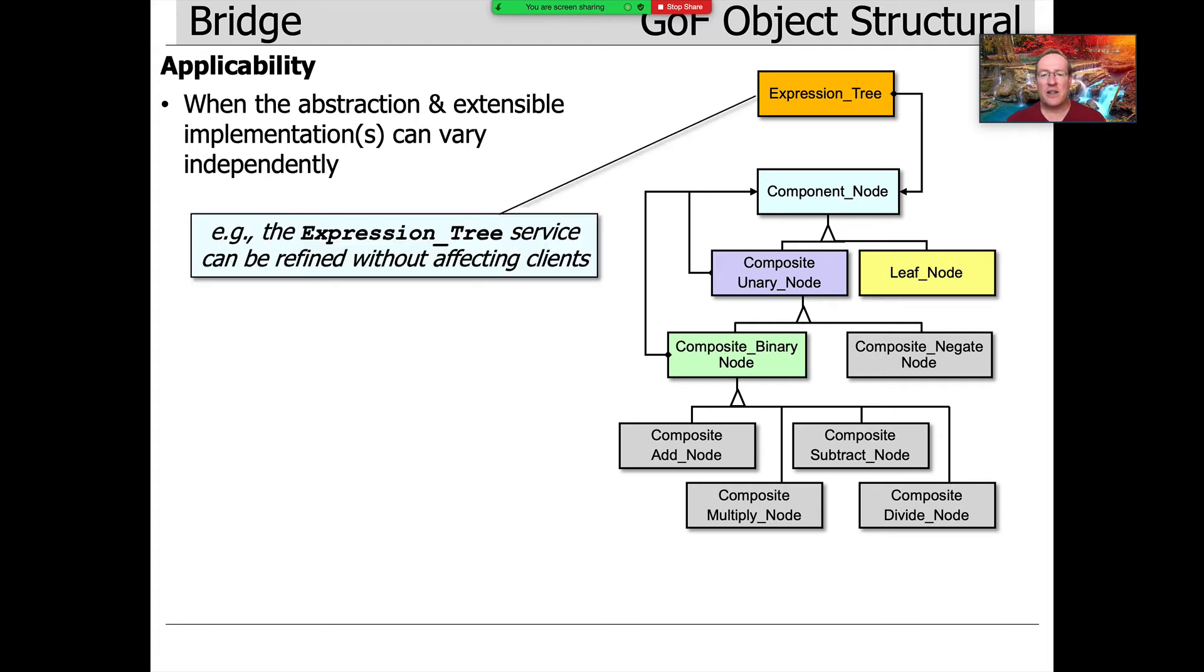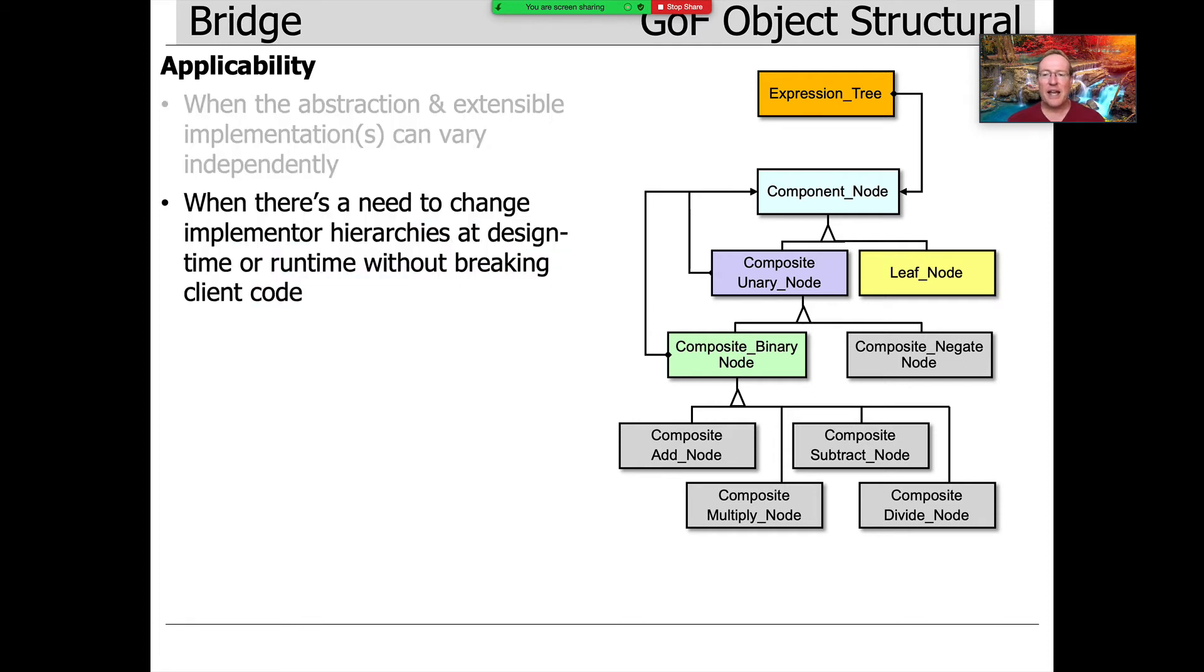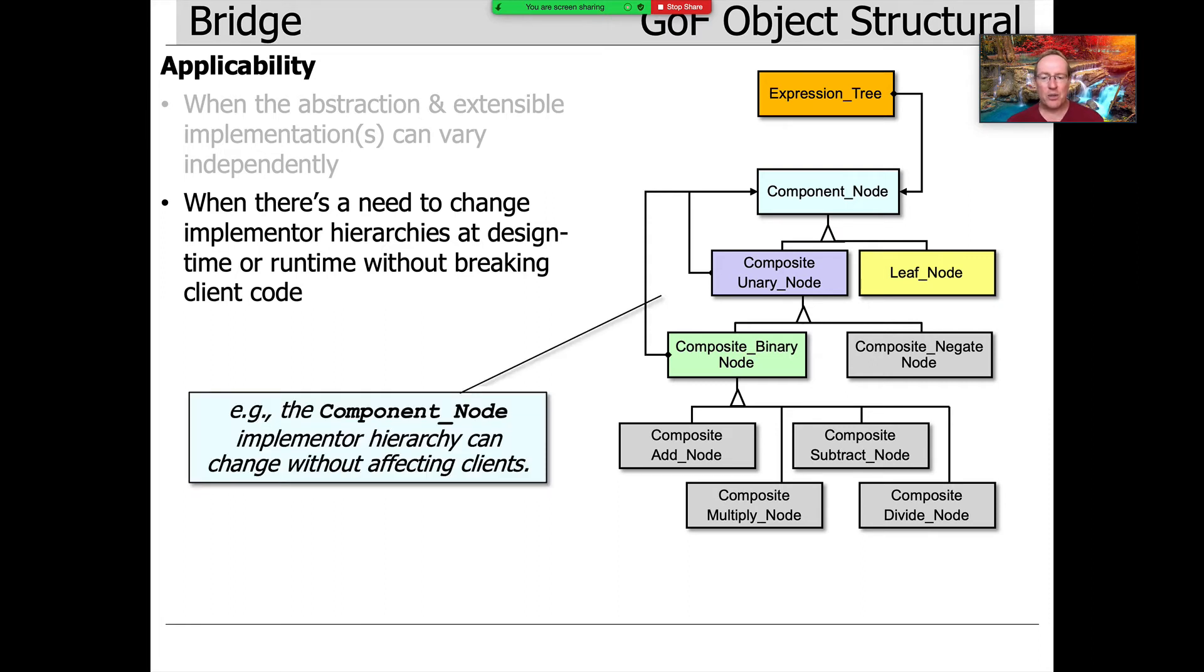Here we can see that the expression tree service can be refined without affecting the clients. And there's also a reason to apply this pattern when you need to change the implementer hierarchy or hierarchies at design time or runtime without breaking the client code. So we want to be able to plug in different elements without changing anything that the clients have come to know and love. Now, some of this may seem a little bit abstract until I show you the examples of how to use this, and then it'll become a lot more clear.